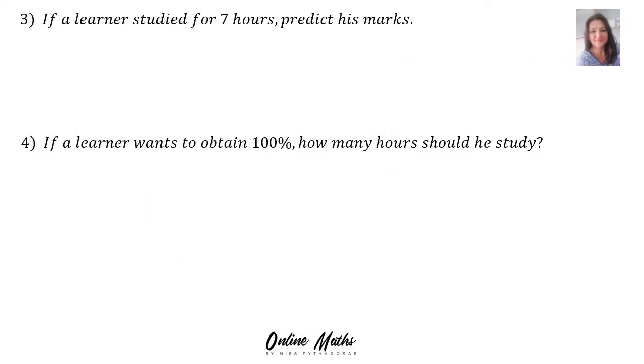The next question says, if a learner studied for 7 hours, predict his marks. What you do is, there's your equation of line of best fit. In x's place, you substitute 7 and you calculate y's value. Therefore, if he studied for 7 hours, his mark will be 66%.